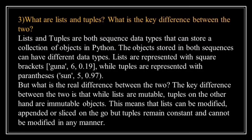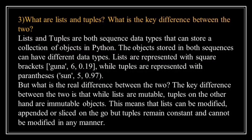What are lists and tuples, and what is the key difference between the two? Lists and tuples are both sequence data types that can store a collection of objects in Python. The objects stored in both sequences can have different data types. A list is a mutable, ordered collection of items — this means you can change, add or remove elements after the list is created. Lists are defined using square brackets. A tuple is exactly the same as a list except that it is immutable. Once we create a tuple object, we cannot perform any changes on that object. Tuples are defined using parentheses. The key difference is that lists are mutable while tuples are immutable objects.